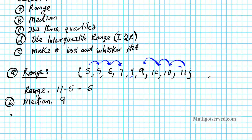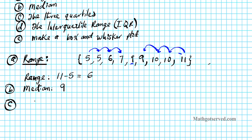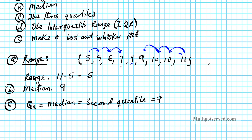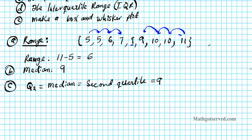Now we're asked to find the three quartiles. The three quartiles are basically your lower quartile, your median, and your upper quartile — also known as the first, second, and third quartiles. We already have one of them: Q2 is also known as the median and the second quartile, and we already know that's 9. This separates the data set into two groups that help us find the lower and upper quartile. The middle number in the lower set is the first quartile, and to the right of the median we can find the third quartile.